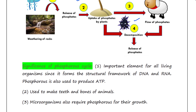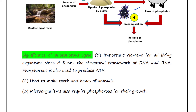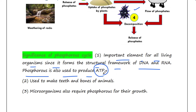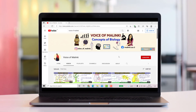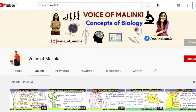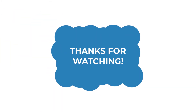Next is the significance of the phosphorus cycle. Phosphorus is an important element for all living organisms since it forms the structural framework of DNA and RNA. Phosphorus is also used to produce ATP, to make teeth and bones of animals, and microorganisms also require phosphorus for their growth.